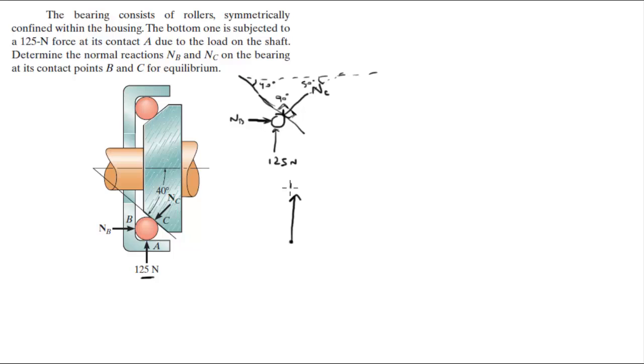We connect the tails of the vectors and we got this 125 N force right here. This is Nc. And Nb is going straight to the right.